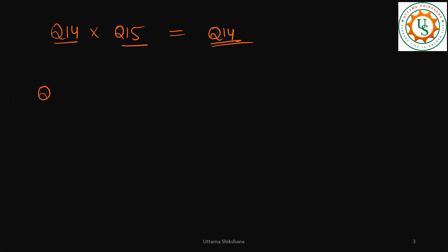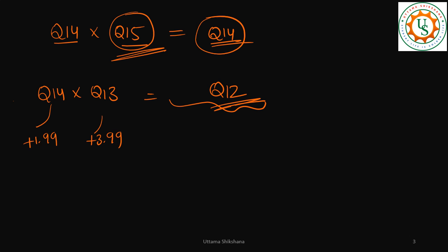Otherwise, if you take some different number, let's say Q14 into Q13, then what will be my output? So this is the maximum plus 1.99, this will be maximum plus 3.99. Then when I multiply these two I have to keep it in Q12 format. But when you are using one of the Q formats as Q15, then definitely your output can be Q14. Even you can try out Q15 into Q13, you will get I think Q13 itself, you can store it in Q13.